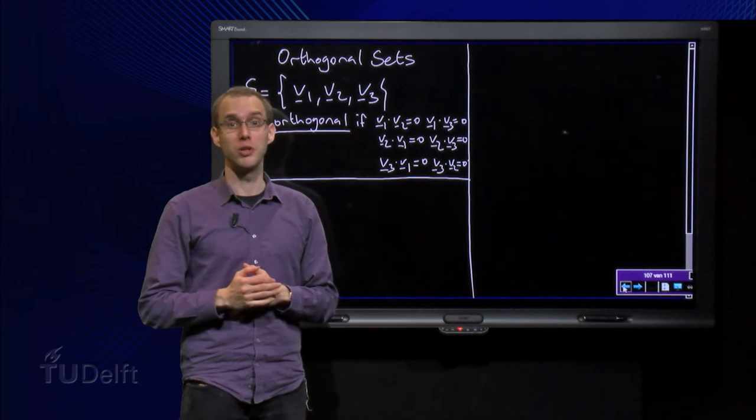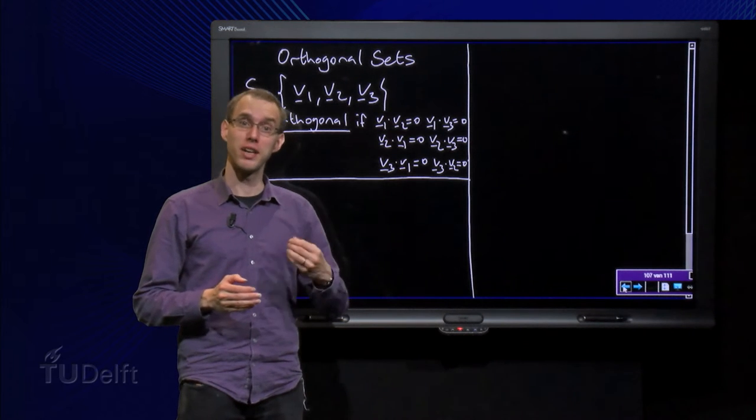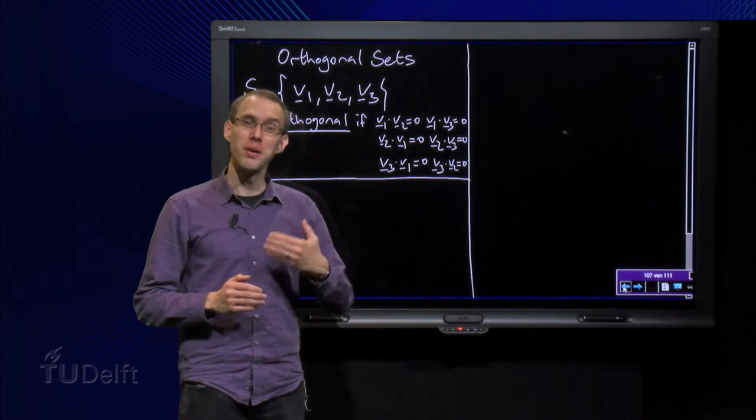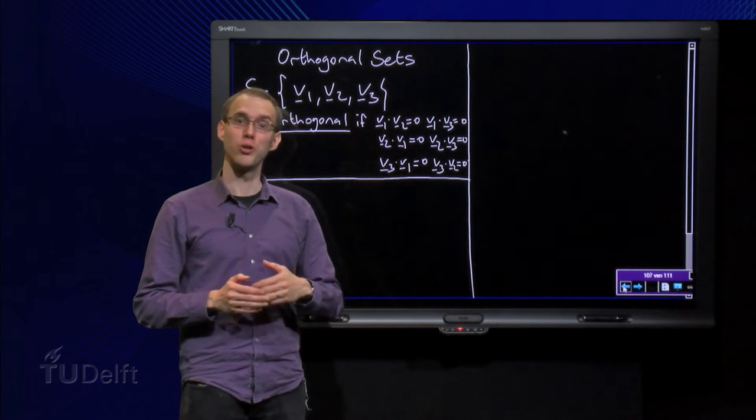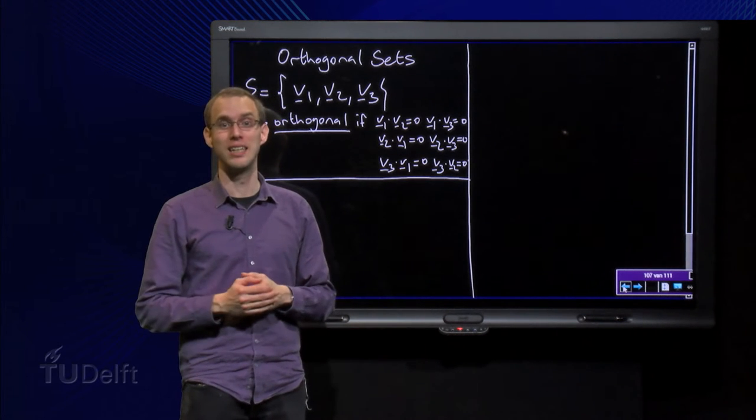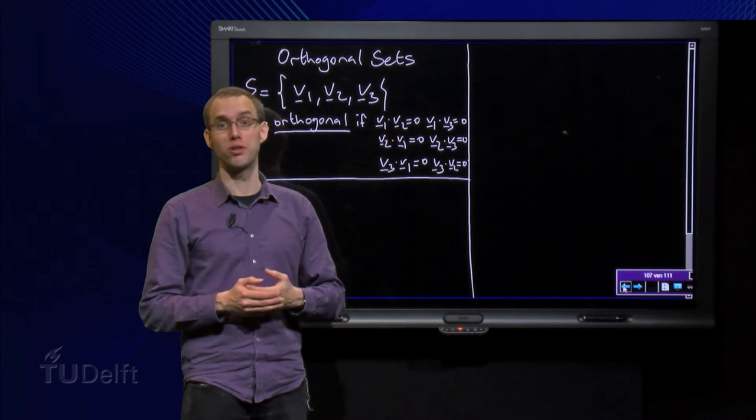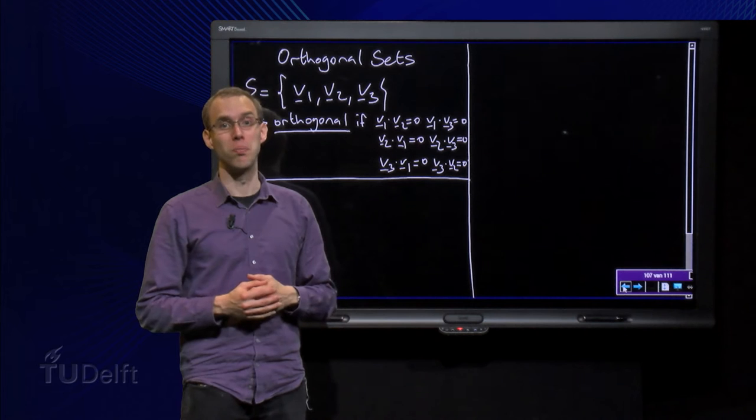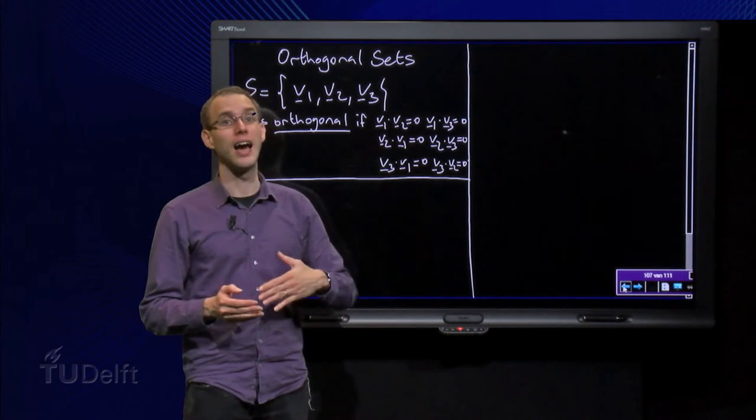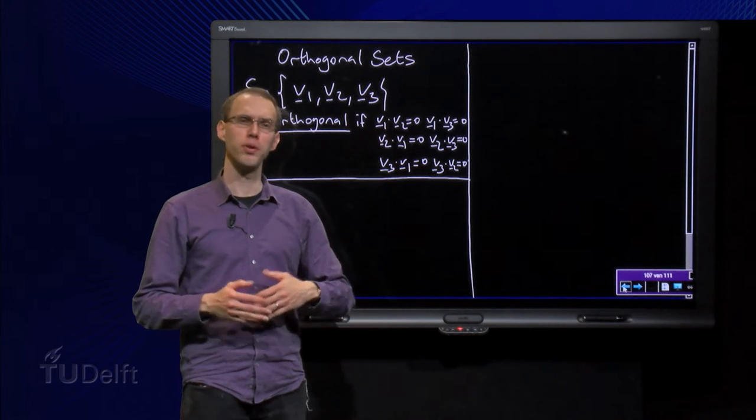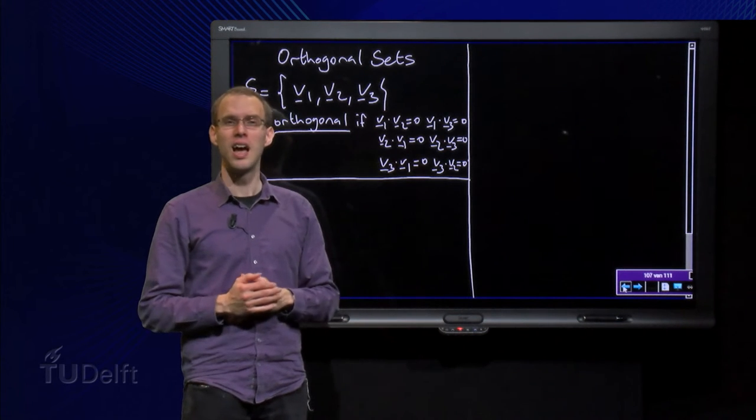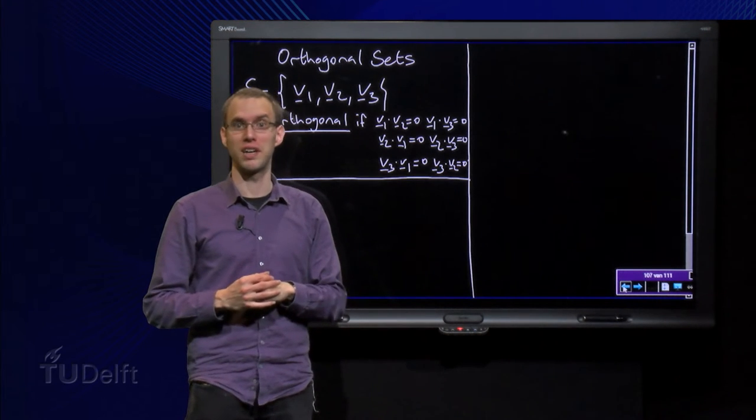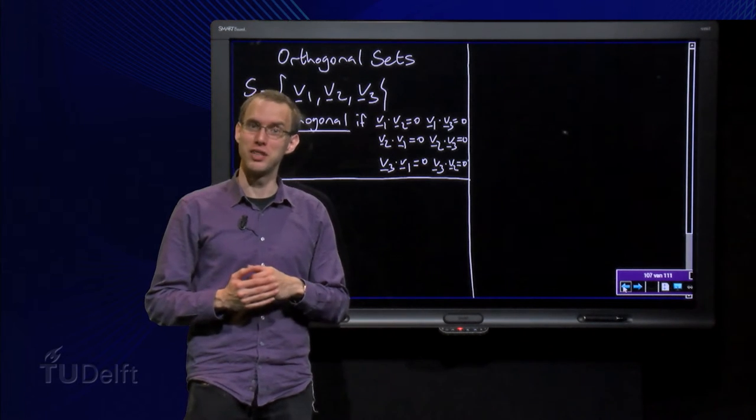We have seen that we can use the inner product to check whether two vectors are orthogonal or not. You may remember that we use this idea to compute the projection of a vector on a line. Think for example of the components of a force. We compute in 2D the components of the force along the line and orthogonal to the line. But we live in 3D. How can we compute the projection of a vector on a plane? For this we need orthogonal sets of vectors. Let us see what those are in this video.